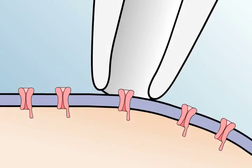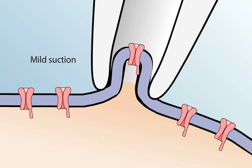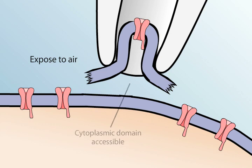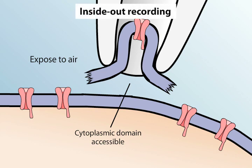Two other variants of the patch clamp method originate from the finding that once a tight seal has formed between the membrane and the glass pipette, small pieces of membrane can be pulled away from the cell without disrupting the seal. Simply retracting a pipette that is in the cell attached configuration causes a small vesicle of membrane to remain attached to the pipette. By exposing the tip of the pipette to air, the vesicle opens to yield a small patch of membrane with its former intracellular surface exposed. This arrangement, called the inside-out patch recording configuration, allows the measurement of single channel currents with the added benefit of making it possible to change the medium to which the intracellular surface of the membrane is exposed.